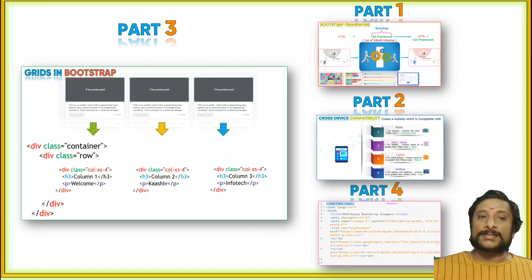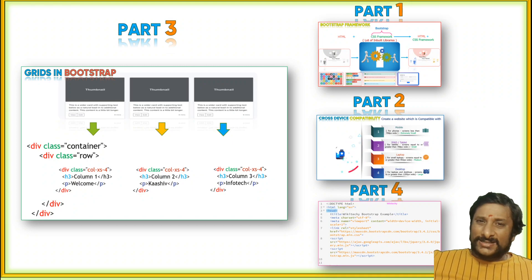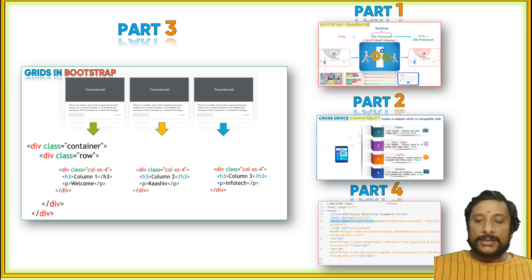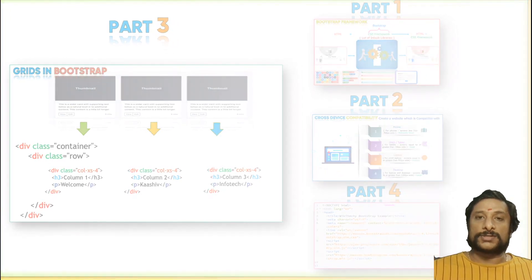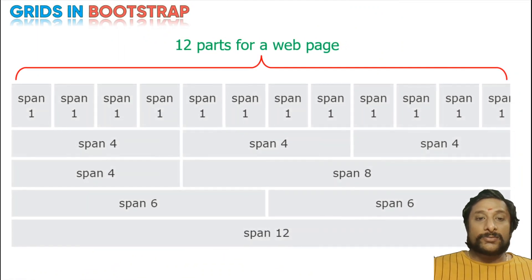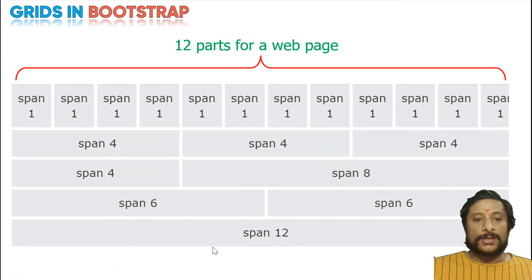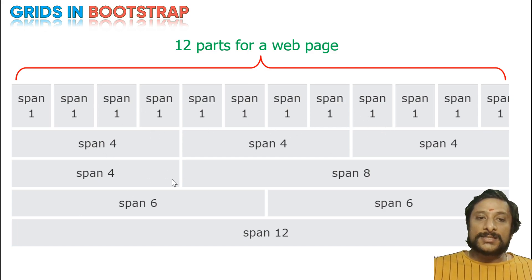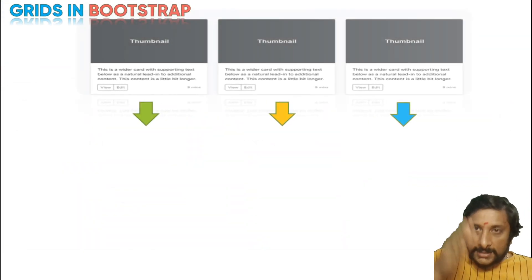Part 3: we are going to discuss grids in Bootstrap. What is a grid? It is the way of storing or showing data — that is called a griding format. Considering you have a screen, the screen will be divided into 12 parts — a single 12-part, or 2 and 6, or 4 and 8, or 4 parts of 3, or even 2 and 1. This is how you are able to show data — cutting your page into grids and using it.